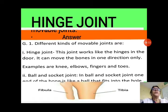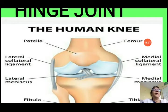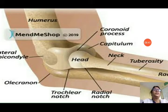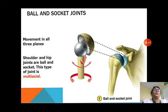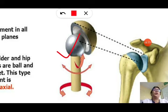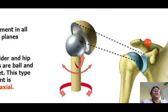You can see the picture showing the hinge joint — the human knee and elbow both have hinge joints. You can also see the structure of the ball and socket joint, where one bone has a ball-like structure and the other has a socket-like structure. The ball fits into the socket, forming the ball and socket joint in our shoulder and hip.